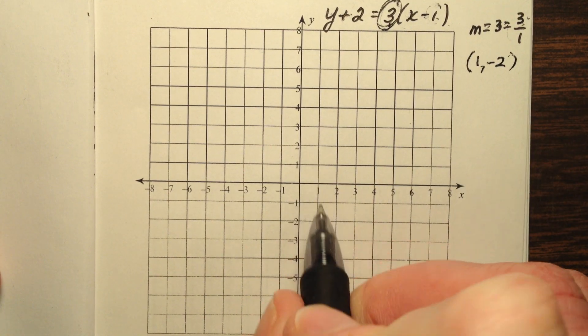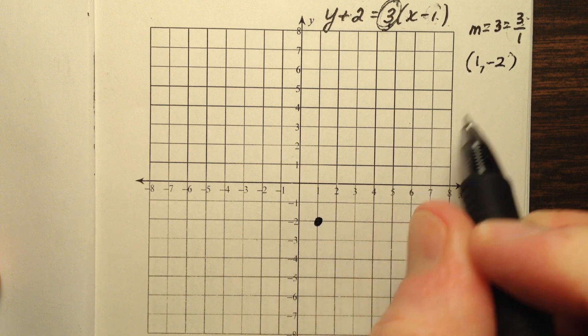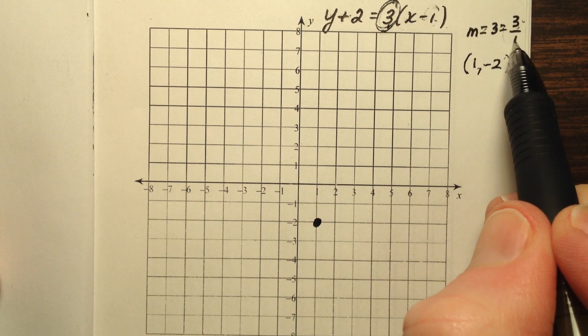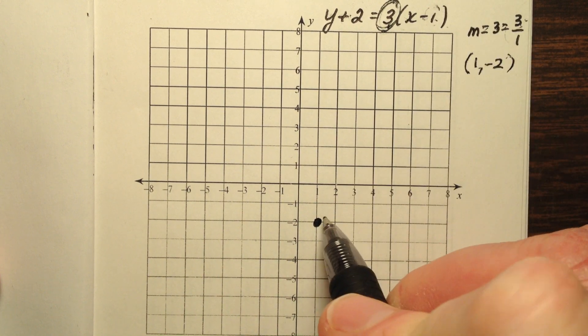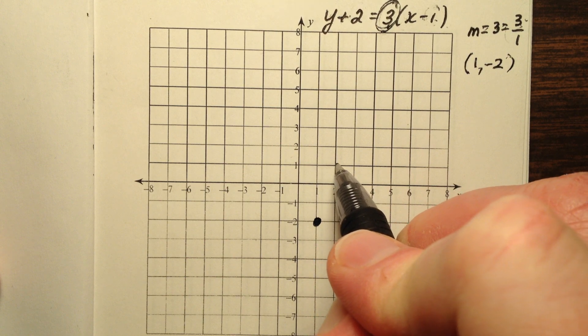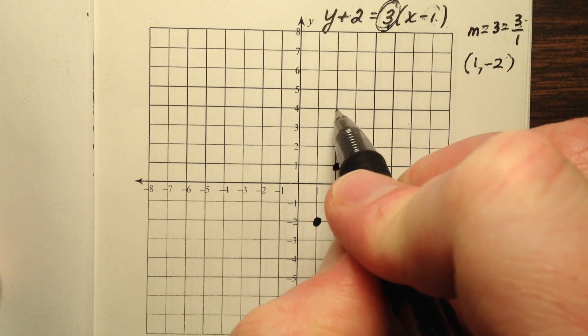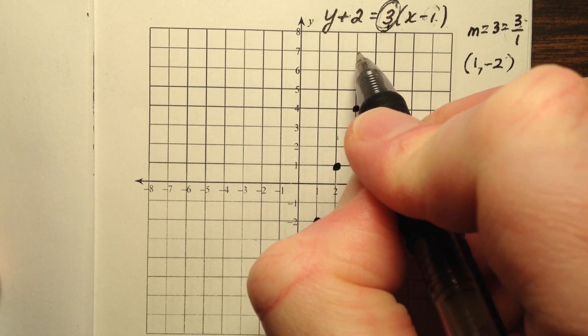So our starting point is 1, negative 2, and we're going to use the slope 3 over 1, which is rise over run, so positive 3 and then positive 1, positive 3, positive 1. Let's do that one more time.